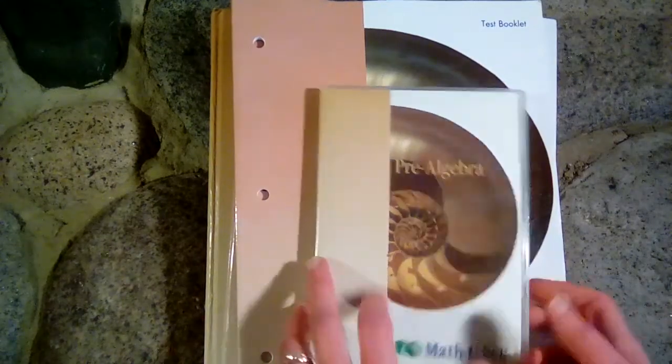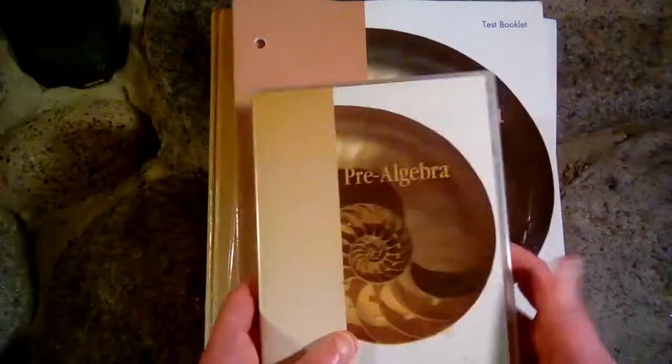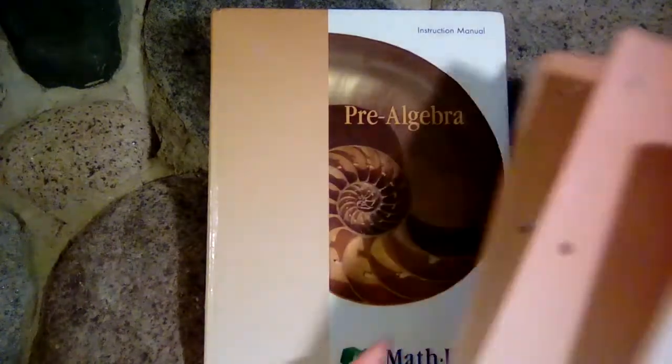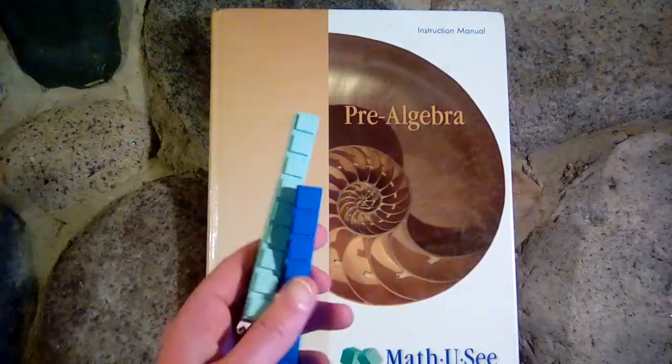First of all, you will need the DVDs. There are two of them for Pre-Algebra. You'll need your test booklet, your student text, and your instruction manual, as well as a set of the Math-U-See blocks.